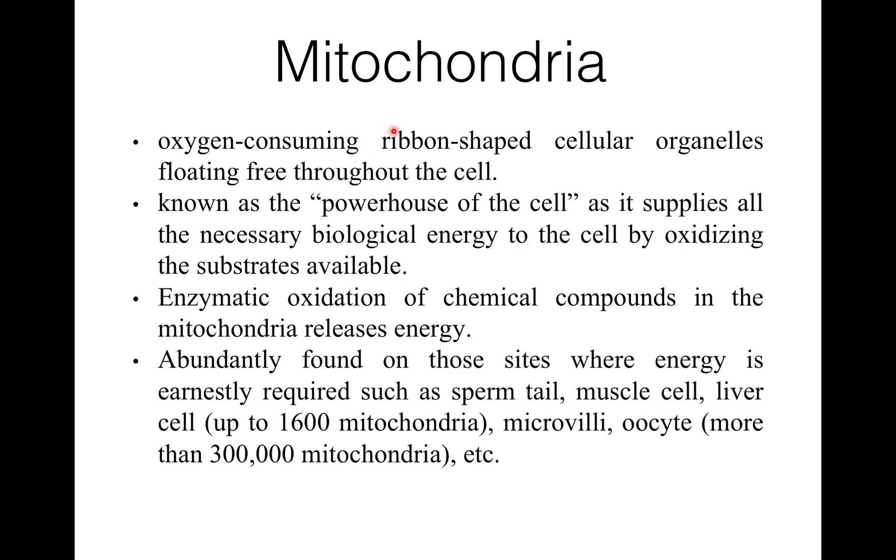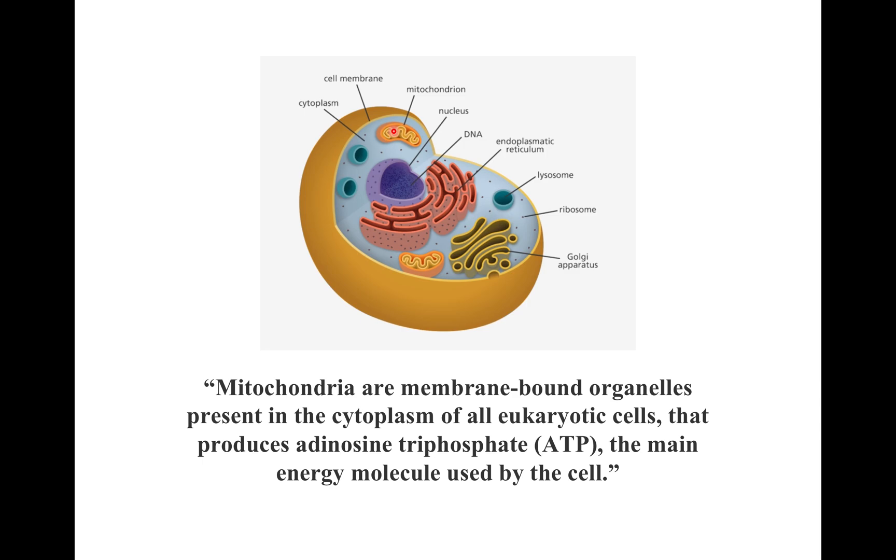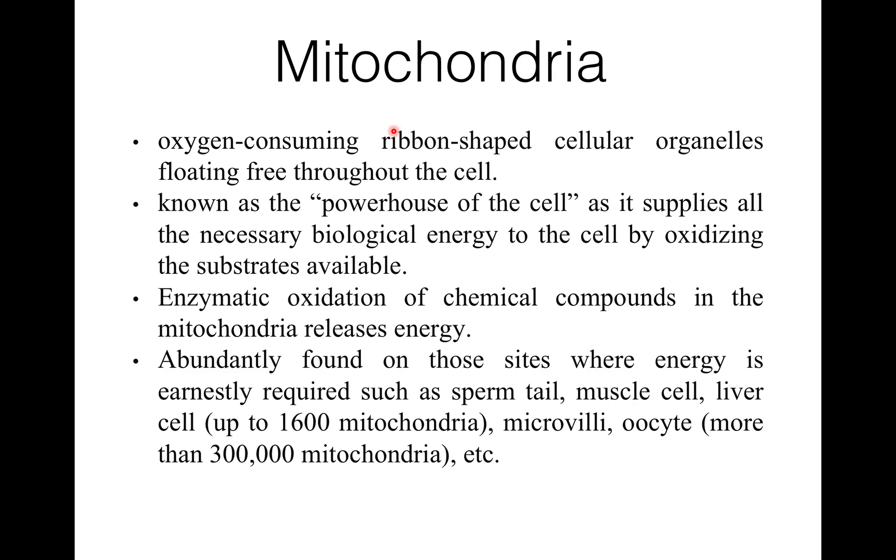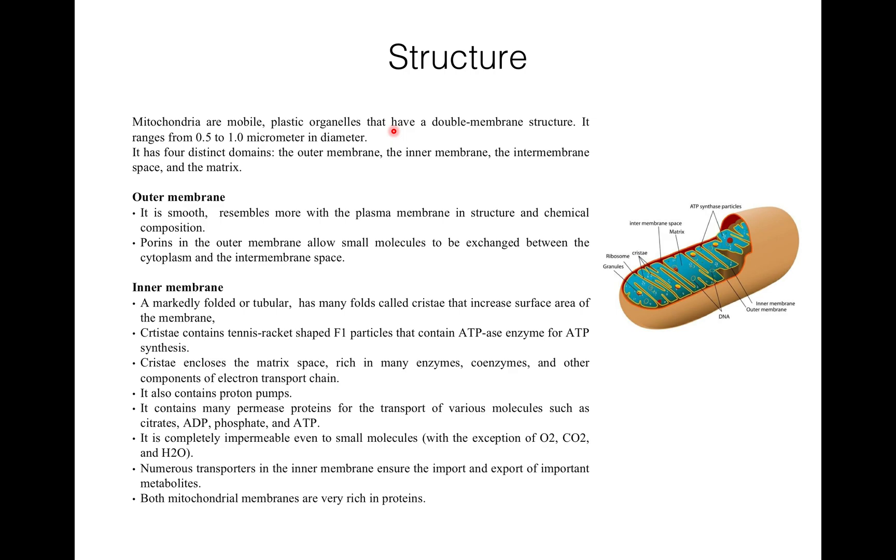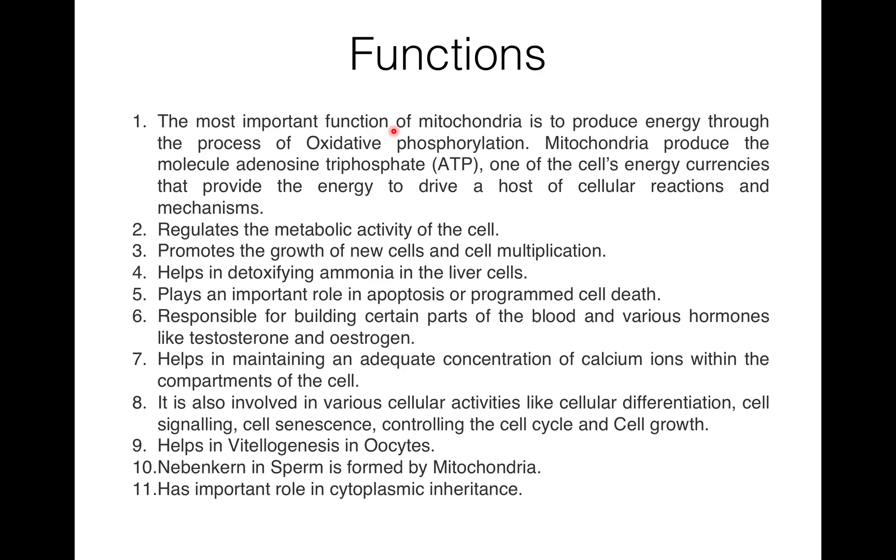So today I discussed what is mitochondria. It is a membrane-bound organelle. Why it is known as the powerhouse of the cell and where they are evidently found. Who discovered mitochondria? Kolliker discovered mitochondria but named as bioplasts by Richard Altman, and Benda coined the term mitochondria. Then structure: it has four main parts - outer membrane, inner membrane, intermembrane space, and the matrix. Then function: the main function is to produce energy, which occurs through the process of oxidative phosphorylation. So this is all about mitochondria. Thank you.